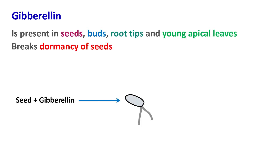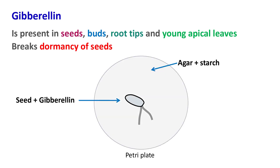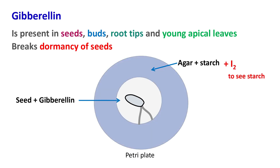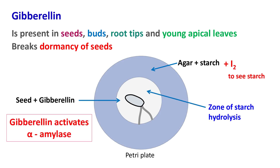If seeds treated with gibberellin are placed on starch agar, they show a zone of starch hydrolysis. This experiment shows that gibberellin induces starch hydrolysis in seeds by activating alpha amylase, an enzyme responsible for the hydrolysis of starch.